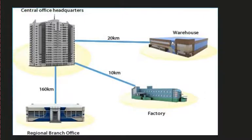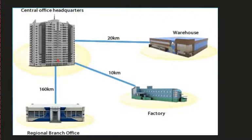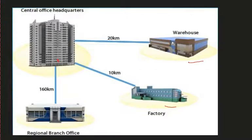The Metropolitan Area Network can be represented like this: you have a central office, then you have a regional branch office which is somewhat farther away, represented by a certain distance. You also have other facilities such as a factory and a warehouse — several locations within a certain metropolitan area. That is your Metropolitan Area Network.